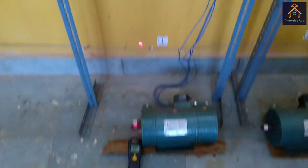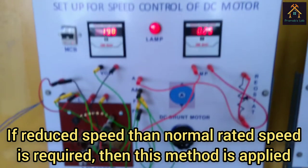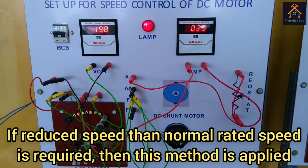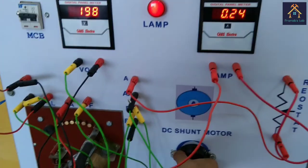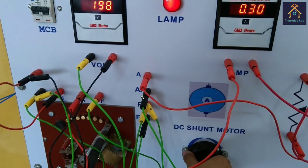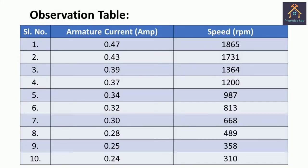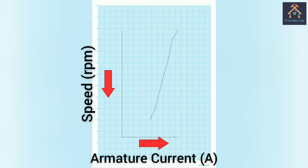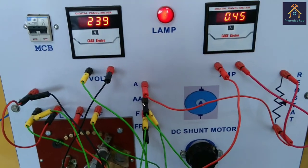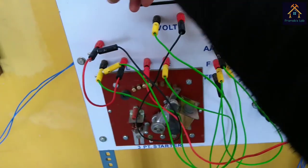From this test we can conclude that if we need to reduce the speed below the normal rated speed, we can use this armature control method for speed control. Now you can see that when we reduce the resistance by rotating the knob of the rheostat in the anticlockwise direction, the current is increasing and the speed is also increasing. You can see the observation table — we take the reading of armature current from the ammeter and speed from the tachometer and plot a graph using this data. The armature current is plotted on the x-axis and the speed on the y-axis. Approximately it is a straight line. So we can conclude that in this test we cannot increase the speed of the motor beyond rated speed, but we can decrease it.